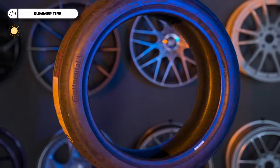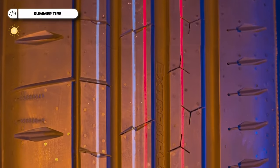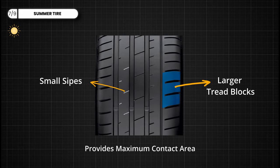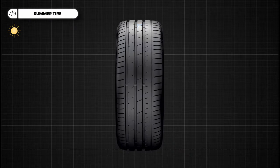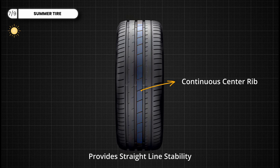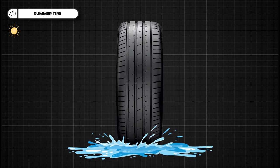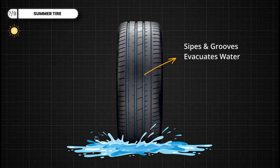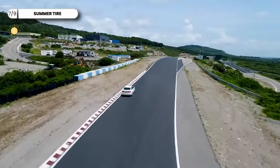Summer tires are a specialized solution engineered to deliver high-performance traction and handling in warm weather conditions. Their tread pattern typically features larger tread blocks with minimal siping, providing maximum contact area and stability during acceleration, braking, and cornering. A continuous rib along the center of the tread enhances straight-line stability, while robust shoulder blocks provide cornering grip. Sipes and grooves are still strategically designed to evacuate water from the tire's contact patch, making summer tires the perfect choice for drivers who prioritize performance in warm weather.